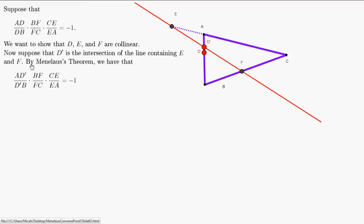Now, since these three points D', E, and F are collinear, we can apply Menelaus' Theorem, which says their product of ratios of division must equal minus one. So AD'/D'B times BF/FC times CE/EA equals minus one.